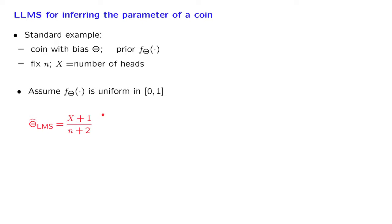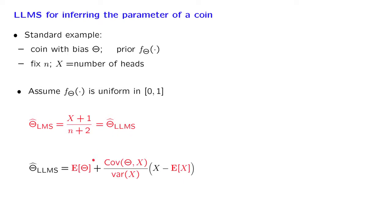So we immediately have the conclusion that the linear least mean squares estimator is this particular function of x. There's not much left to do. But just for practice, let us derive this answer directly from the formulas for the linear least mean squares estimator and see whether we get the same answer. We want to use this formula, and in order to apply it, all we have to do is calculate the expected values, variances, and covariances.